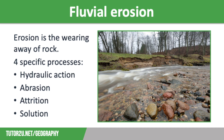We then have attrition. This is where stones being carried along the river will collide with each other and the riverbanks and bed. As they do this, their jagged edges will be knocked off or smoothed down. Some small stones may smash into several smaller ones, which will be further eroded into smooth pebbles.